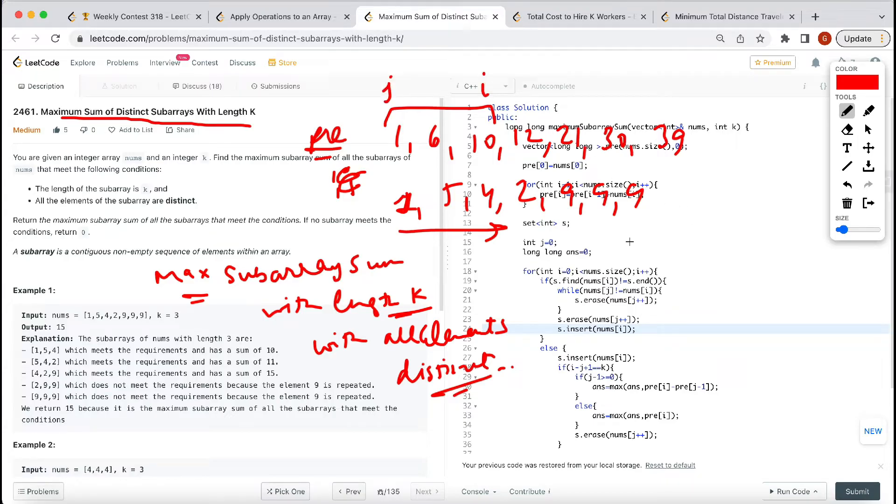This is J here, this is I. Prefix of I minus prefix of J minus one gives us the subarray sum from J to I. So we will have a prefix sum, and then we will find distinct elements with K size.